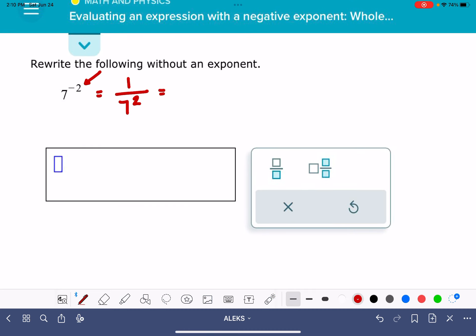And 7 squared is 49, so the answer here is 1 over 49.